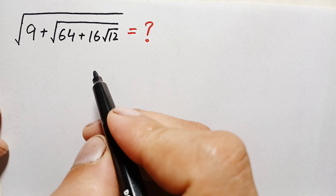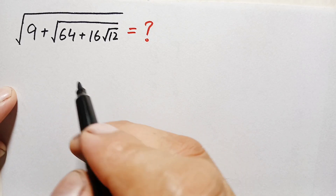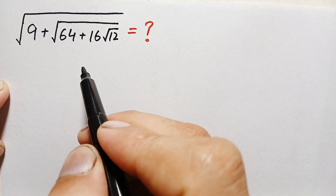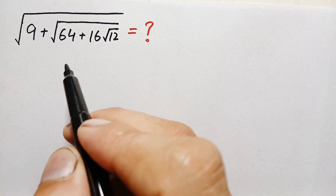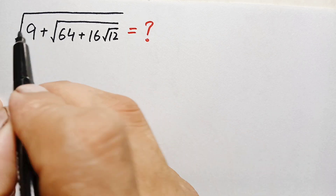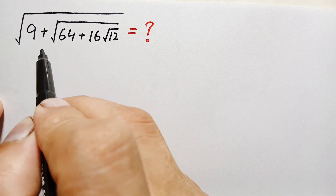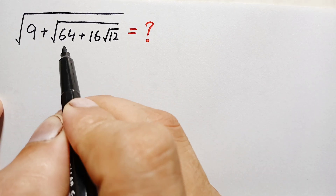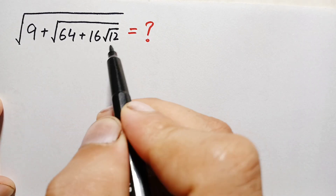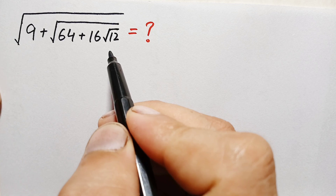Hello everyone, you are welcome. How to solve this beautiful square root math problem, which is the whole square root of 9 plus square root of 64 plus 16 times square root of 12.